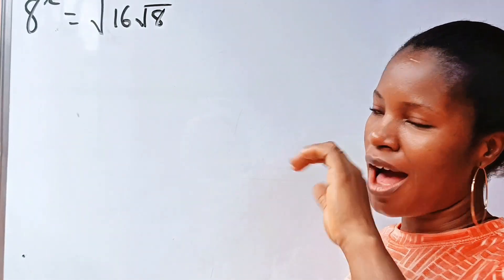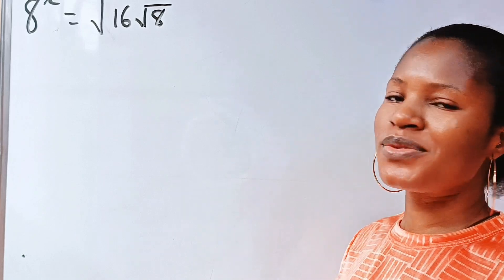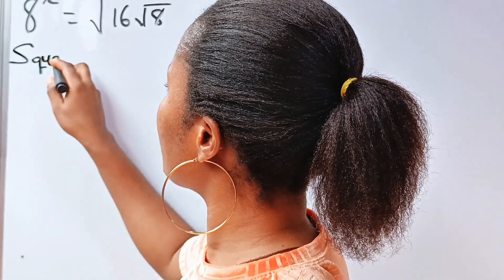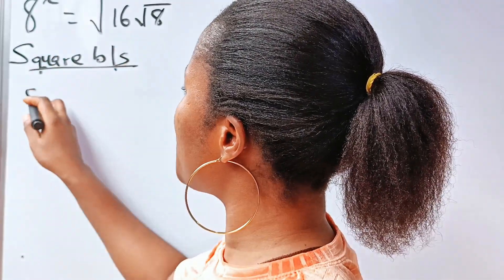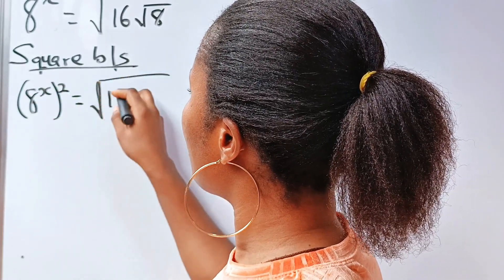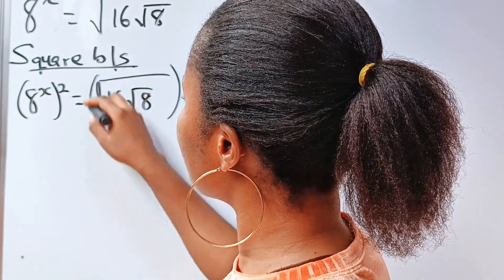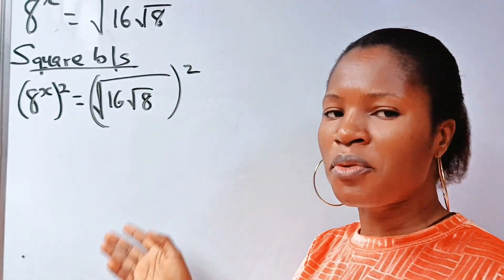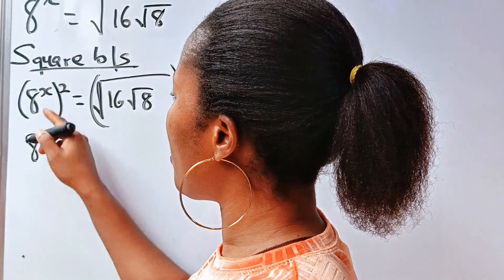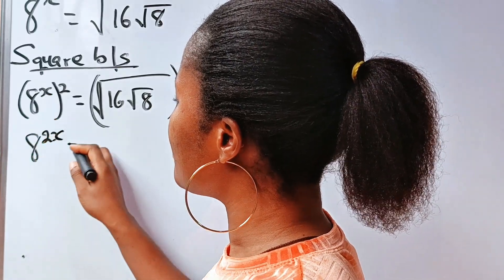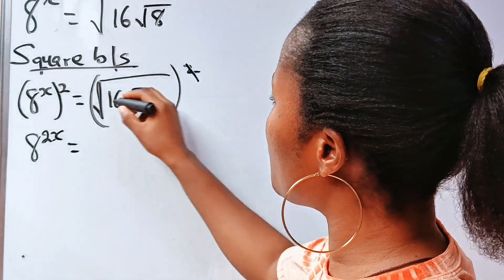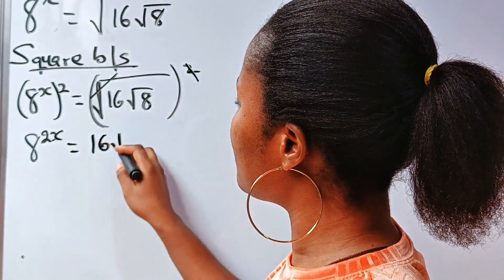Now for the second method — the most interesting one. First, we square both sides. So if we do that, we have 8 to the power of x, squared, is equal to the square root of 16 times the square root of 8, all squared. This gives us 8 to the power of 2x is equal to 16 times the square root of 8, since the square root squared cancels.